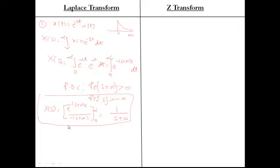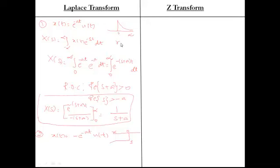Now take a second example: X(t) = −e^(−at)·u(−t). This signal, when plotted, extends from minus infinity to 0 only — a decaying exponential on the negative side. This is a left-sided signal, whereas the first example was a right-sided signal.